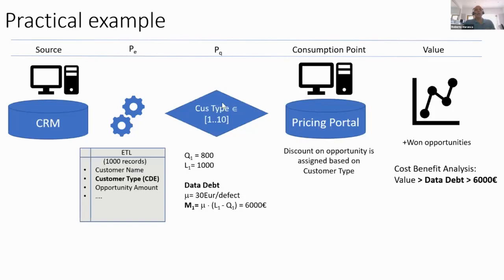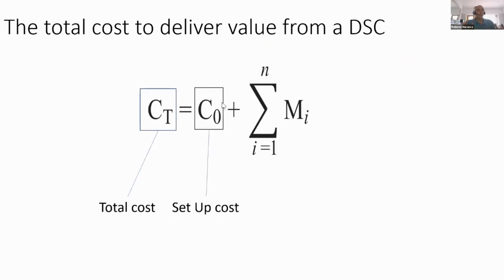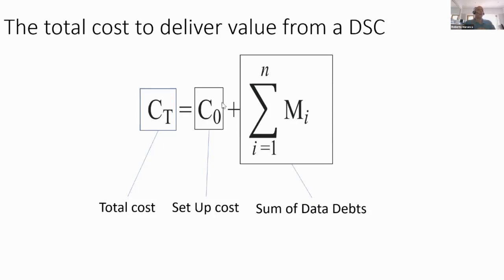Taking a more formulaic approach: the total cost to deliver value from a data supply chain comes down to a setup cost — creating processes, staffing, servers — plus the sum of all data debts inherent to that data supply chain. You can make this very complex depending on how refined the move value becomes, which depends on how well you know the innards of your company and the mechanisms that connect activities to cost. It's scalable, but still needs some calibration.